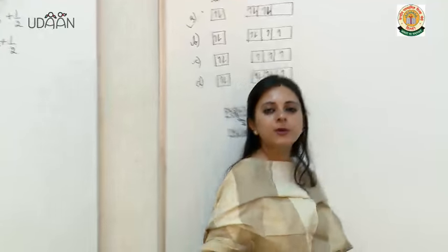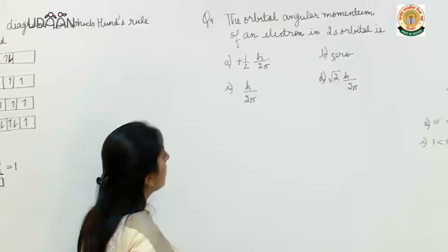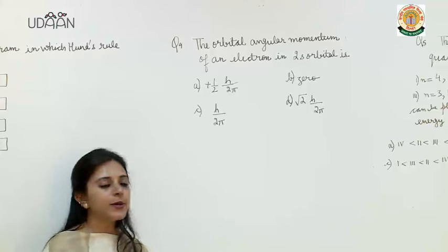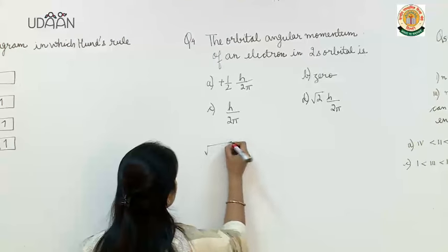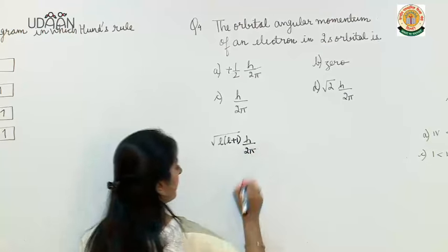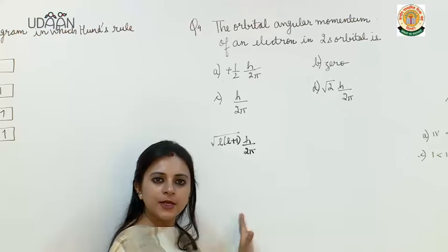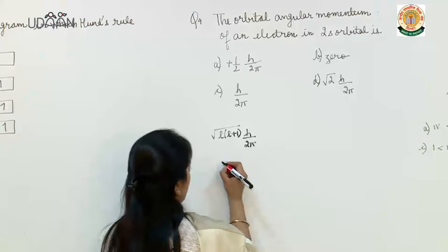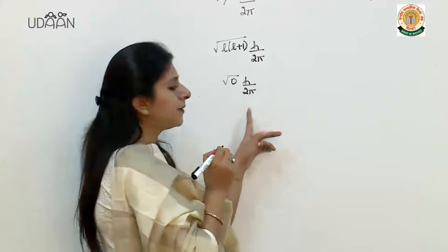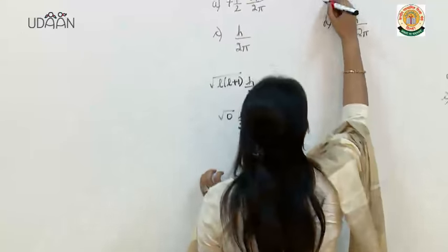Question number 4: the orbital angular momentum of an electron in 2s orbital. The formula of orbital angular momentum is √(l(l+1)) × h/2π. The value of l for an s orbital is 0. If we substitute l = 0, then when we multiply it with h/2π, the answer becomes 0. So the answer is B, that is 0.